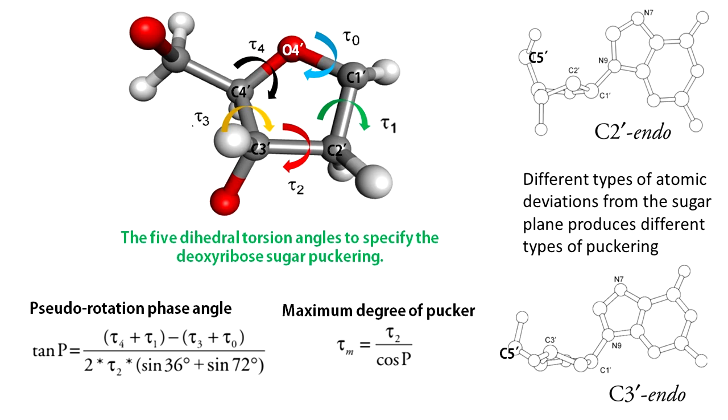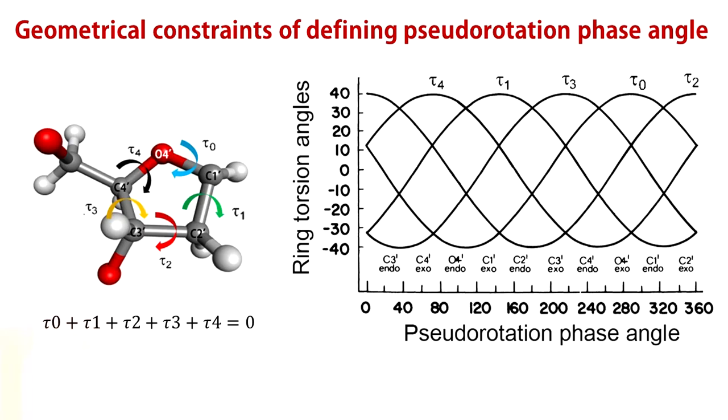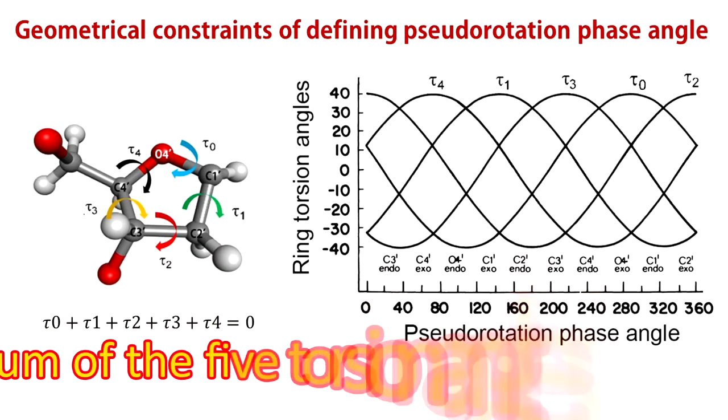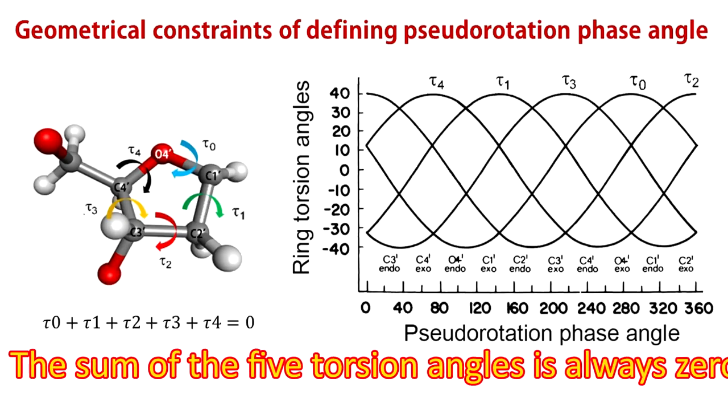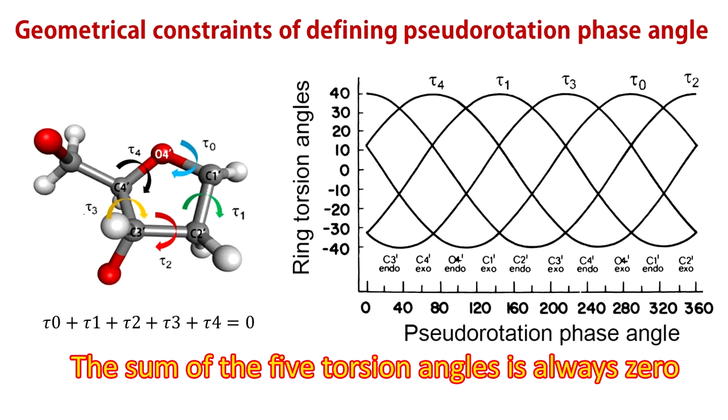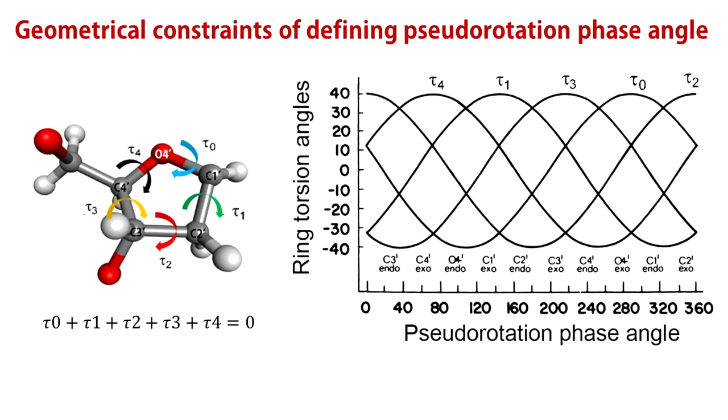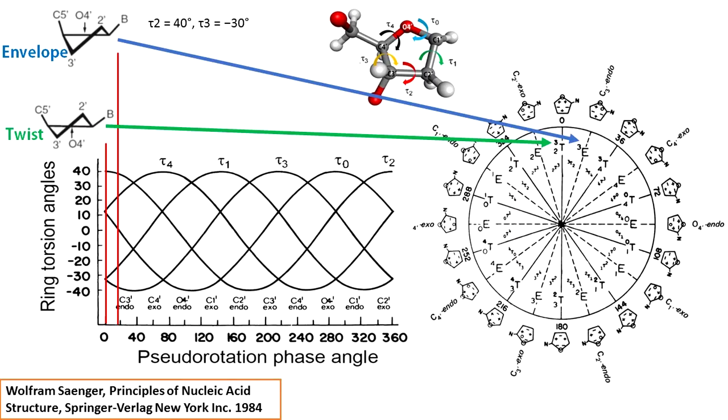Now, let me show you some geometrical constraints associated with the definition of pseudo rotation phase angle. According to the definition, the sum of the five torsion angles is zero. You can see the theoretical changes of the five torsion angles during one pseudo rotation phase angle cycle in the range 0 to 360 degrees. At every phase angle P, the sum of the five torsion angles are always zero.